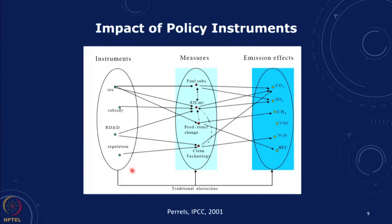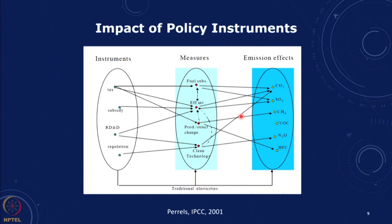From the IPCC report, we can see that when we look at taxes and the various instruments — whether a tax, subsidy, or funding for research, development and design — we can have regulation. In all of this we can substitute fuels, look at energy efficiency, change the structure of production, or bring in new clean technologies. Based on all of this and the kind of elasticities involved, there will be an impact resulting in a change in emissions. If we can create a model of our system — through input-output analysis, computable general equilibrium, or any other economic model — we can see what happens when we implement a policy instrument.